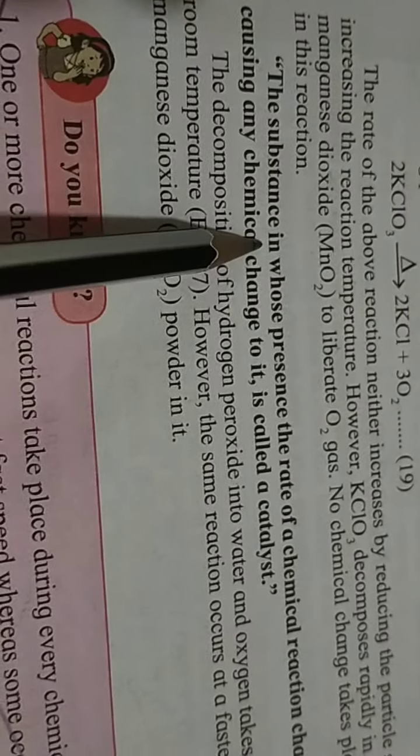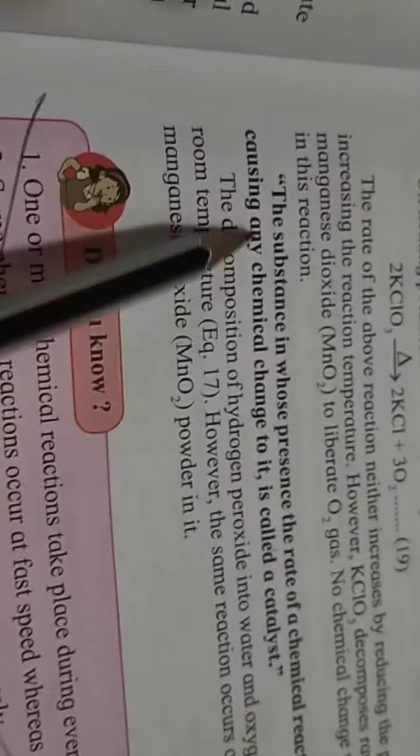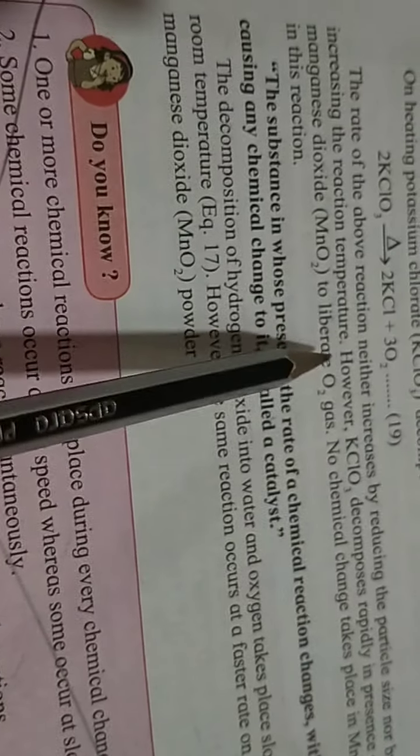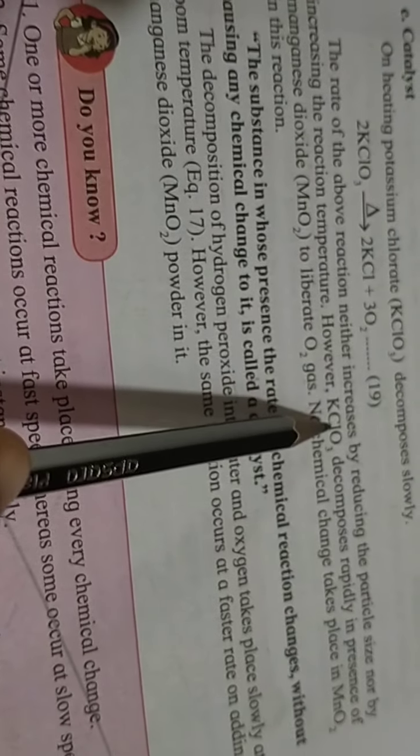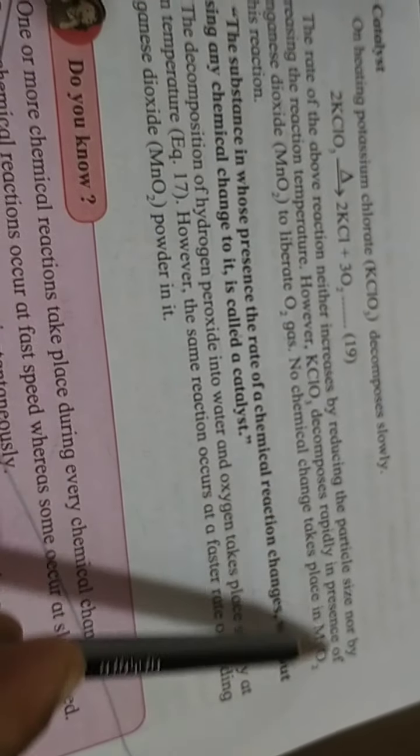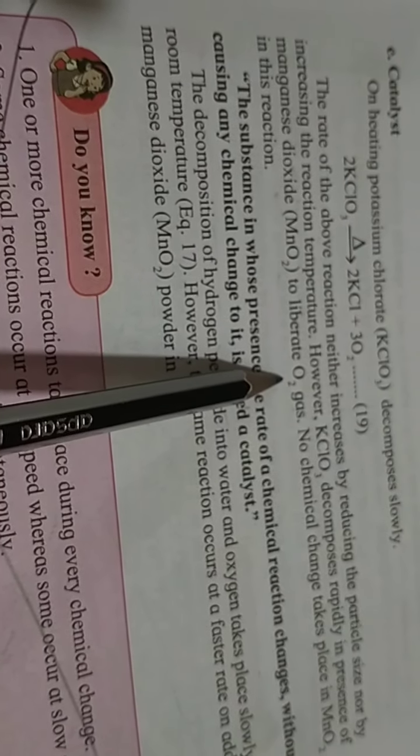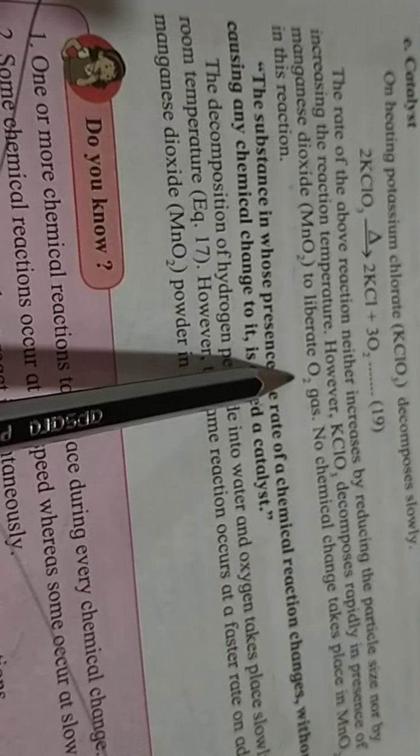The substance in whose presence the rate of chemical reaction changes without causing any chemical change to itself is called a catalyst. But for this, we need a substance which will decompose it rapidly in presence of manganese dioxide to liberate O2, meaning oxygen gas.